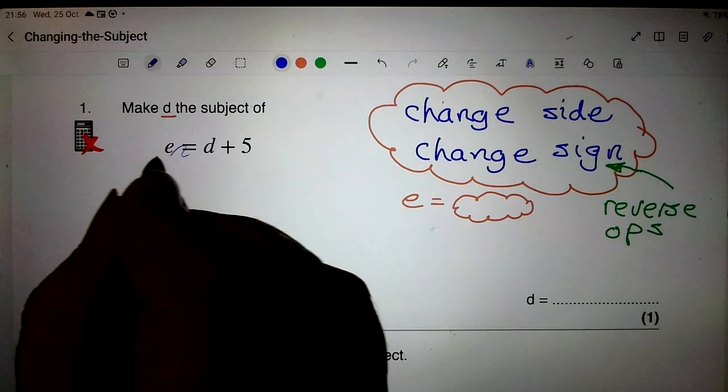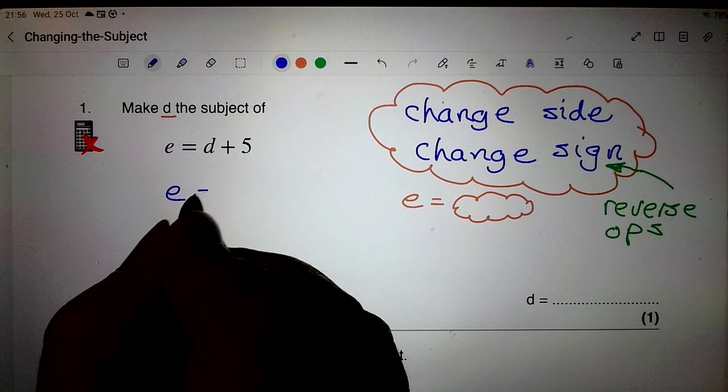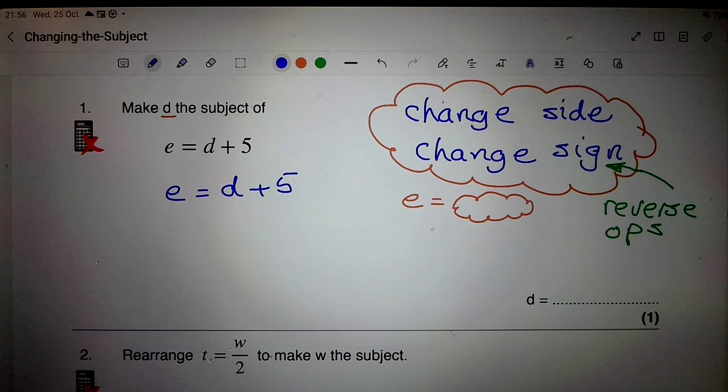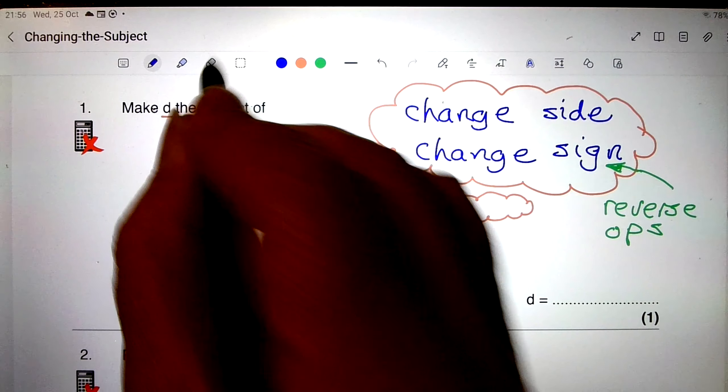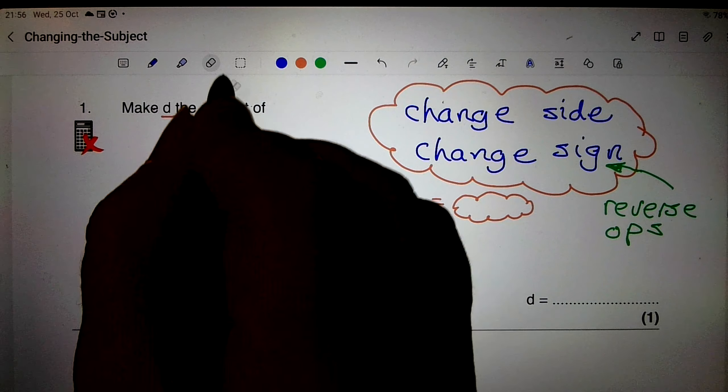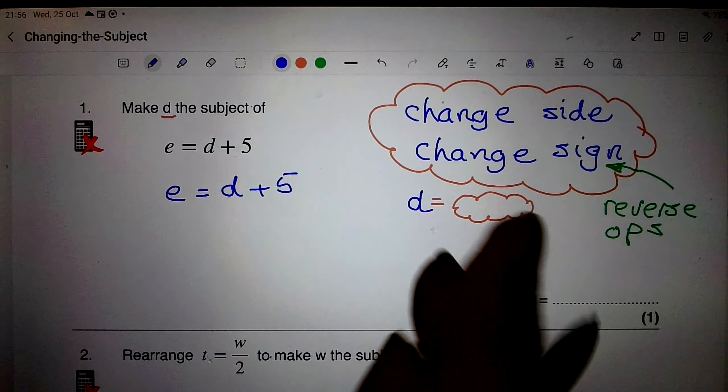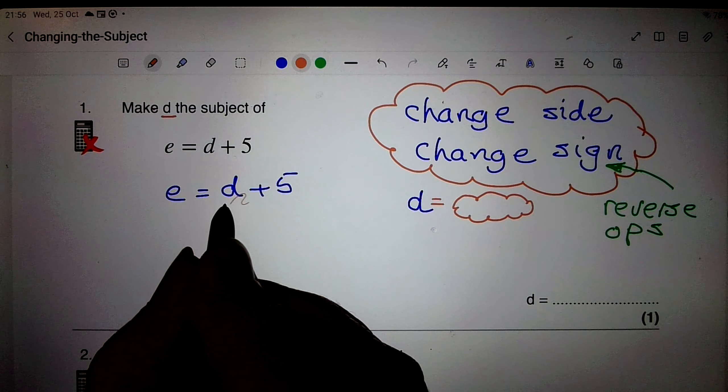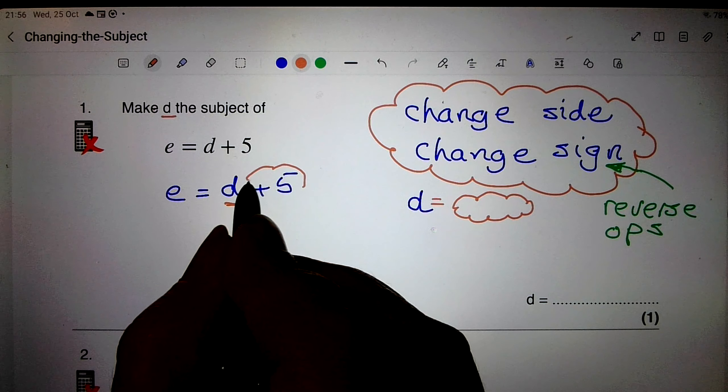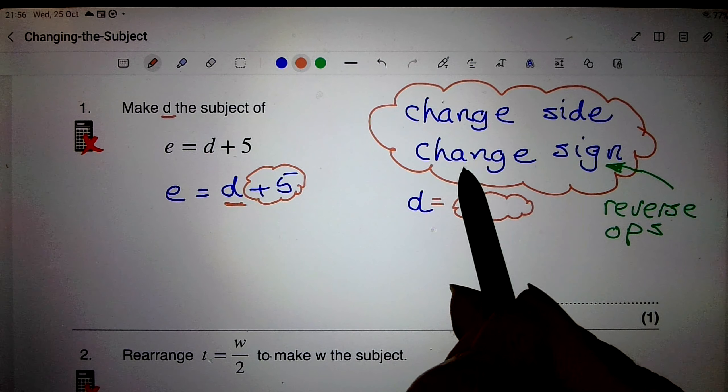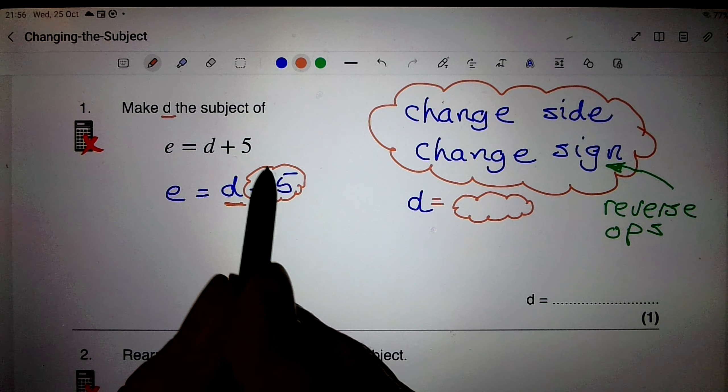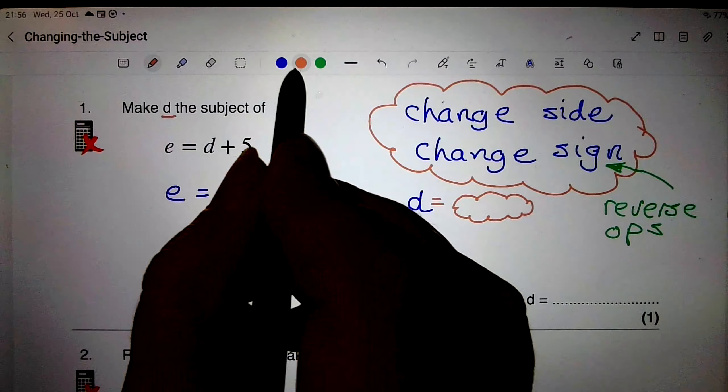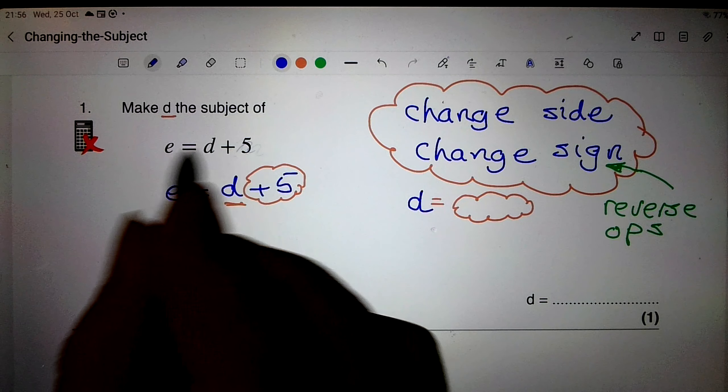Right, I'm going to do this the slow way. I'm going to write this out again as e equals d plus 5. Now I want to get d by itself, so I've got to get rid of this. Change the side, change the sign. So I take this 5 over to the other side of the equal sign, change the sign, and of course that means reverse operations.